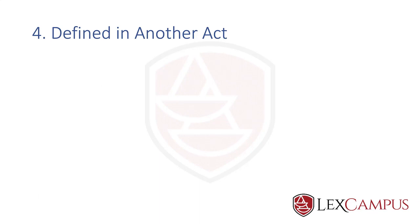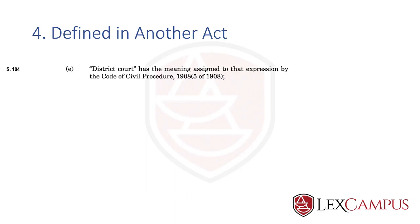The fourth kind of definition is defined in another act. The intellectual property appellate board, for instance, is not actually defined in the Patents Act — it's defined in the Trademarks Act. Similarly, 'district court' has the meaning assigned to it by the Code of Civil Procedure (CPC). So district court is not defined in the Patents Act; you have to read that provision in another act to understand the full impact of the definition.